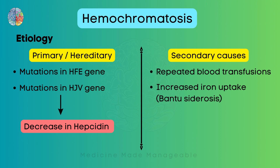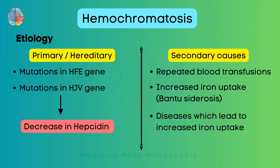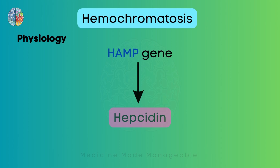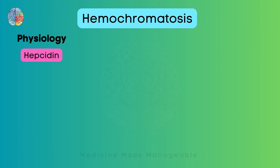Now coming back — diseases which may lead to increased iron uptake from the intestine can also lead to this. Now what is the physiology or the normal working? We have the HAMP gene in our body, and this is responsible for producing the protein hepcidin.